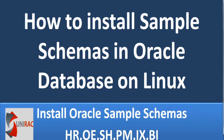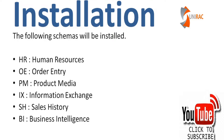We'll see how to install and execute the schemas on a Linux operating system database or Oracle Express Edition. HR is Human Resources, OE is Order Entry, PM is Product Media, IX is Information Exchange, SH is Sales History, and BI is Business Intelligence.